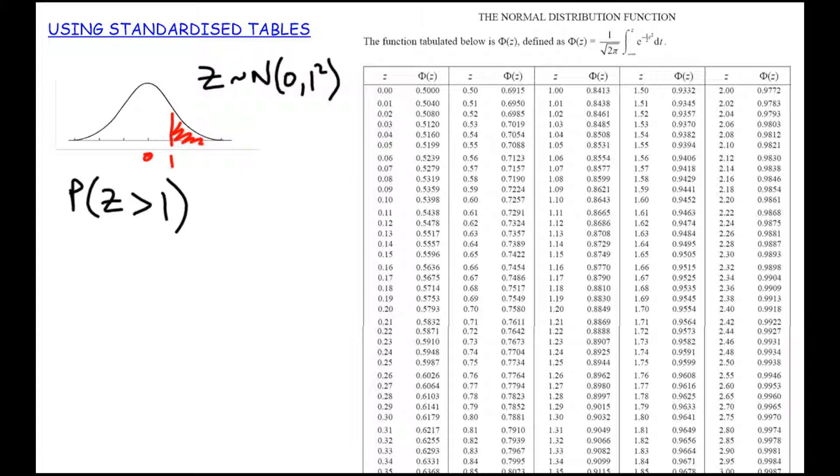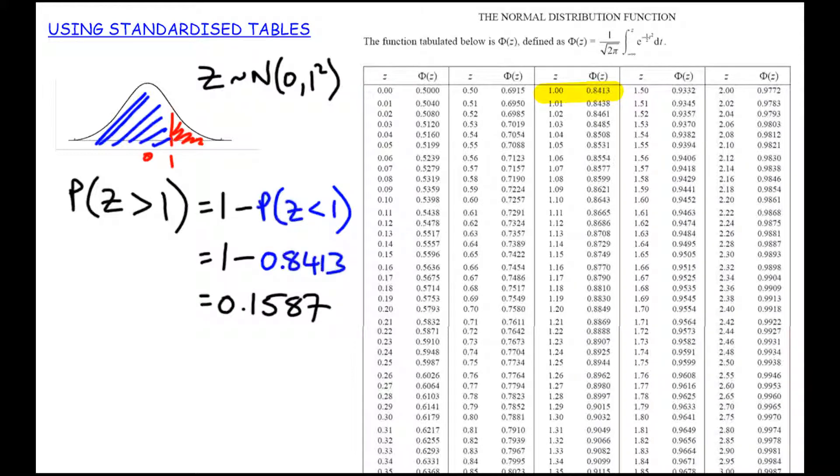But I can look up this blue region in the tables, and I'm going to end up doing 1 minus the blue region. The blue region is the probability that Z is less than 1. We saw that previously to be 0.8413, which leads to my final answer of 0.1587. So I can use the 1 minus technique that we used previously with the binomial distribution to help me find some probabilities. That's actually the property that all of them add up to 1.